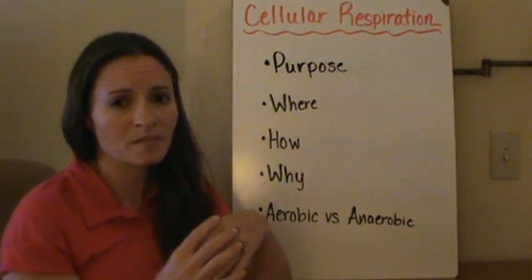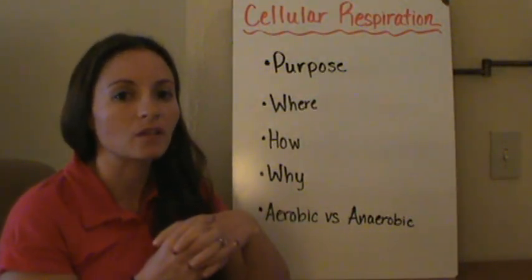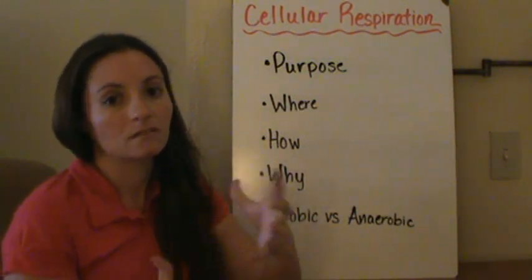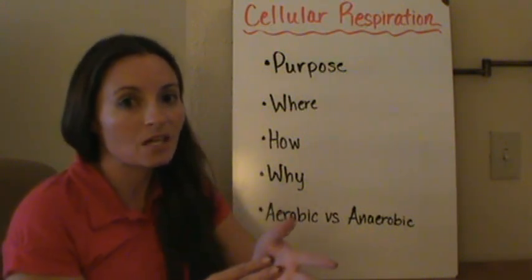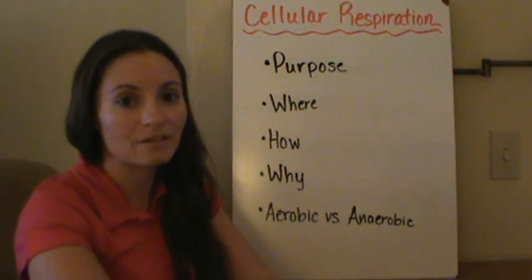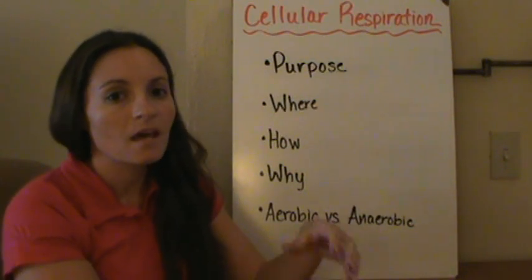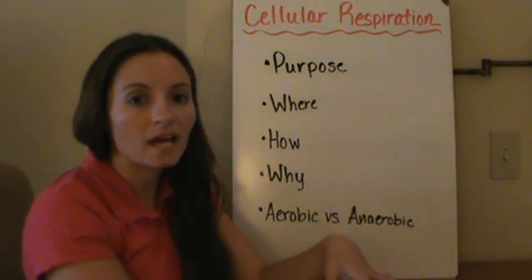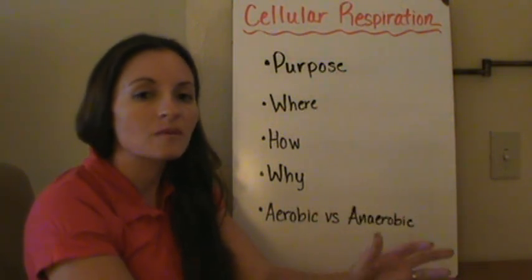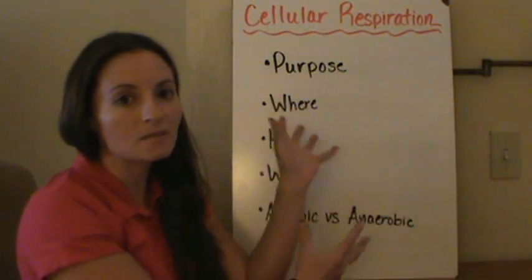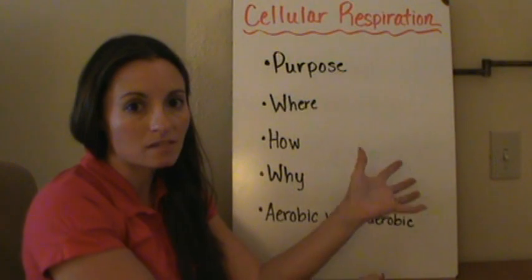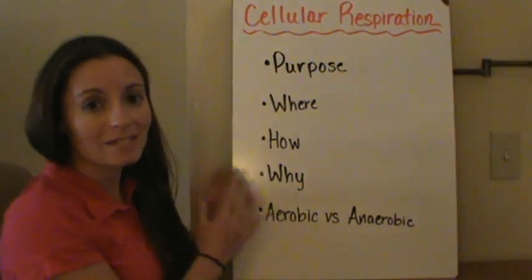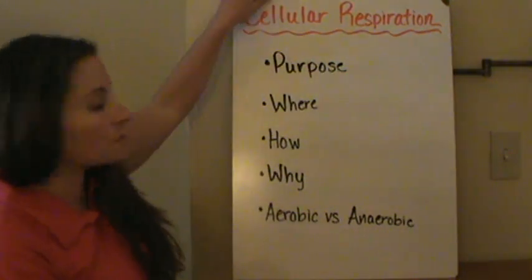The purpose of cellular respiration is to take and break down that glucose molecule so that energy can then be used within the organisms. The organisms that go through cellular respiration are everything that needs energy. However, prokaryotes don't actually have mitochondria, so they don't go through this exact process, but they do go through a similar process to break down their food molecules and release that energy.